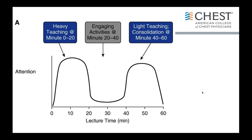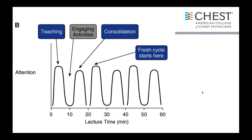They suggest dividing your session into 10 to 15 minute cycles with an initial period of didactic information delivery, followed by an engaging activity, and then some lighter teaching to consolidate information towards the end. For a 60-minute lecture, you could break it into 20-minute blocks with harder teaching up front, audience engagement activities potentially including ARS or small group activities, and then a period of consolidation at the end of that cycle before starting the next one. This encourages an audience whose attention may be waning to re-engage.